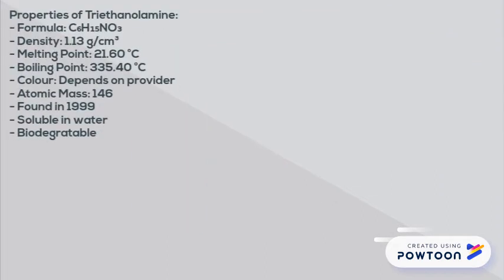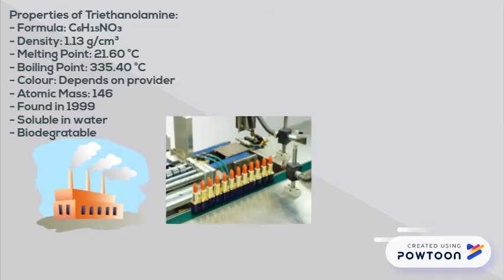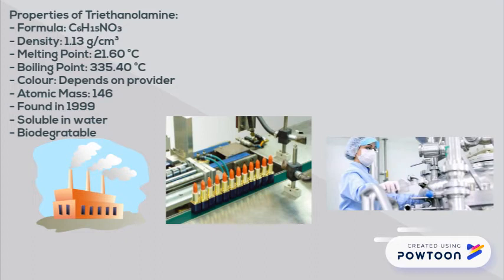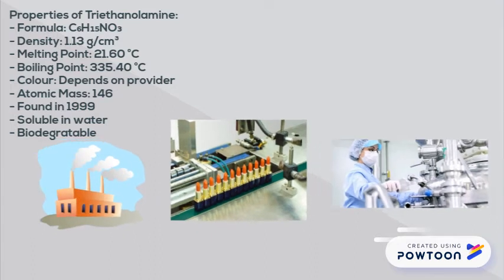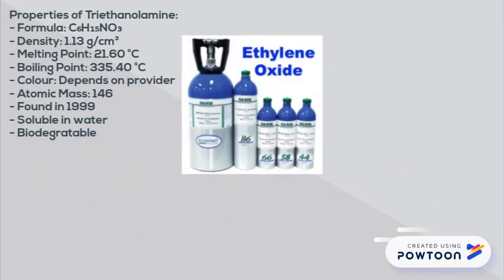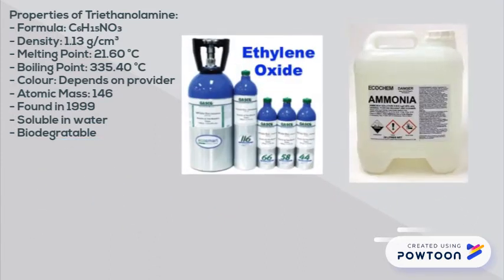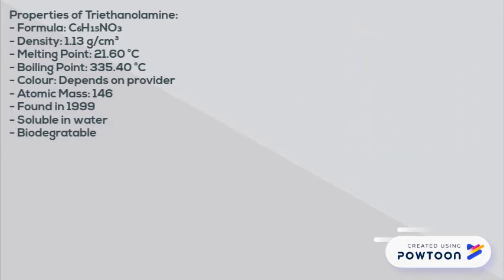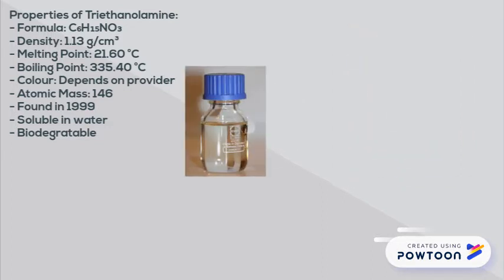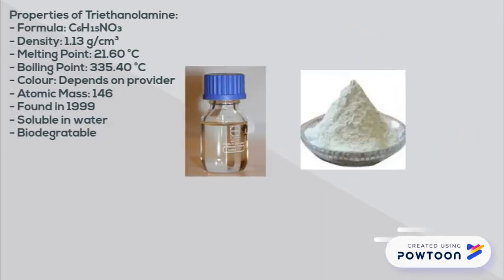Now let's talk about our compound altogether, triethanolamine. Triethanolamine can be used for industrial purposes as well as for cosmetics and pharmaceutical purposes. Triethanolamine is a mixture of ethylene oxide and ammonia, both known as highly toxic substances. It comes as an oily liquid with a slight odor of ammonia, and it can also be found as a powder.